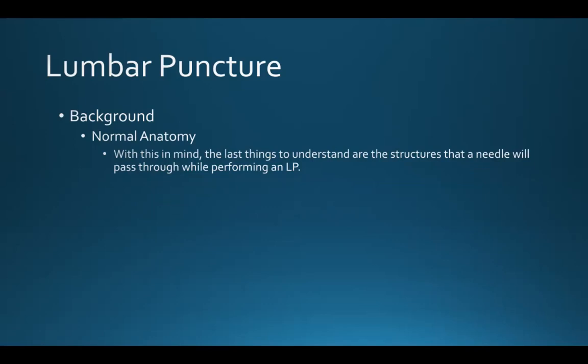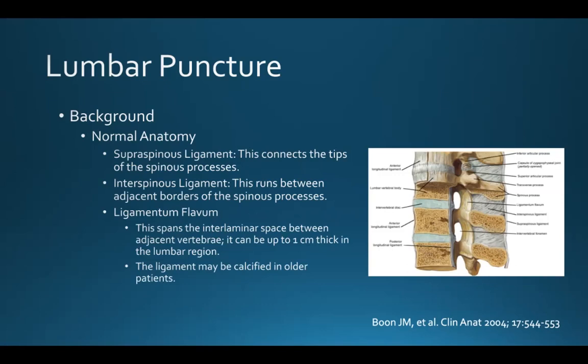The last things to understand are the structures the needle will pass through during the lumbar puncture. First is the supraspinous ligament, which connects the tips of the spinous processes. The interspinous ligament runs between the adjacent borders of the spinous processes. Then there's the ligamentum flavum, which spans the interlaminar space between adjacent vertebrae and can be up to one centimeter thick in the lumbar region.